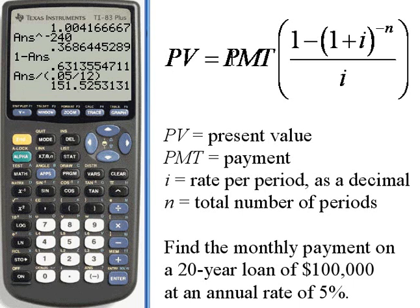So the present value equals the payment times that 151. If we want to find what the payment is, we'll divide both sides by 151. So we want to divide the present value. The present value is the amount of the loan. That was $100,000. So we'll take 100,000.